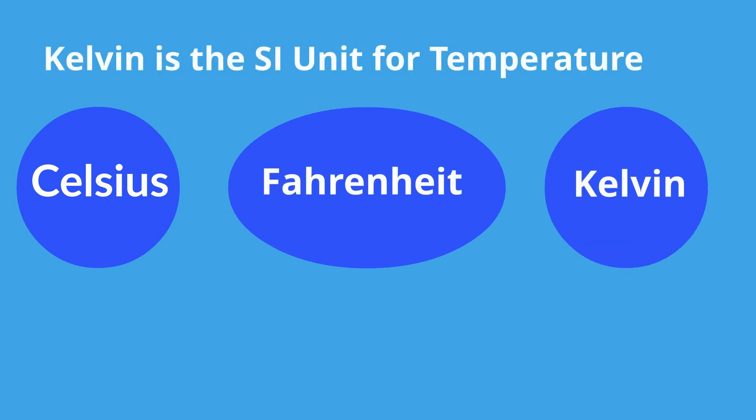Kelvin is the SI unit for temperature and is one of the seven SI base units. Celsius is a derived unit, and you can find Celsius by taking Kelvin and adding 273.15 to it.